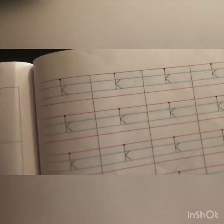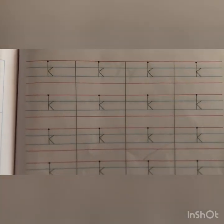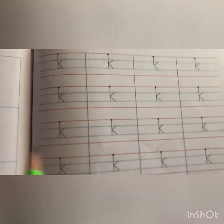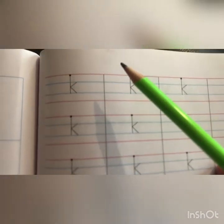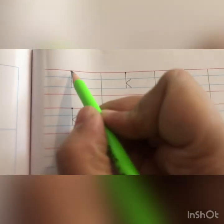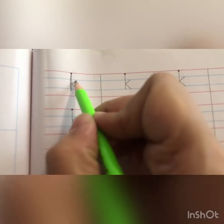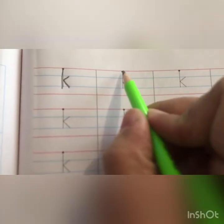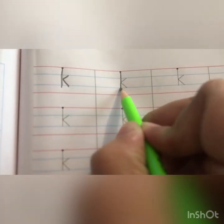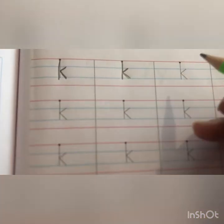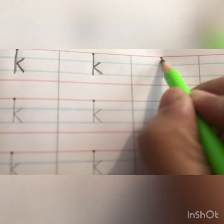Now children, coming to the next page of your English pencil time book — page number 89. Over here, children, we are going to write letter k in the four lines — letter small k. So come on! First we make a standing line from the red line to the blue line, then we make a slanting line from the blue line, and another slanting line down to the bottom blue line.